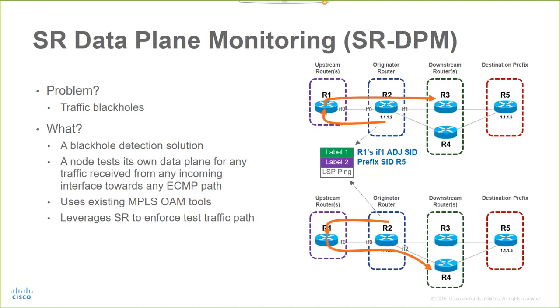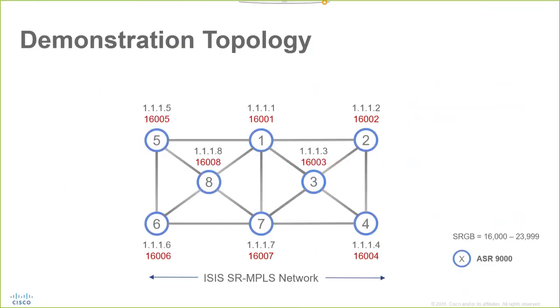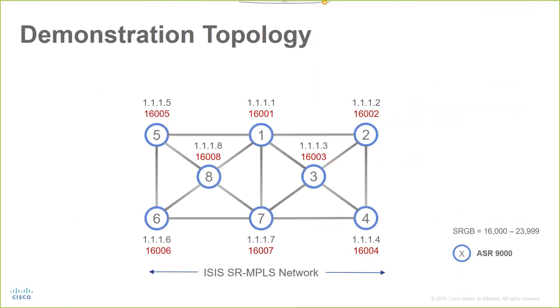The result is a scalable monitoring solution for LSPs with localized detection process that involves only a subset of the neighbor nodes. The topology for today's demonstration consists of a network of eight Cisco ASR9000 routers running ISIS segment routing. For every node, its loopback and configured prefix seeds is shown in red in the drawing.